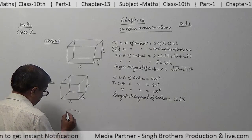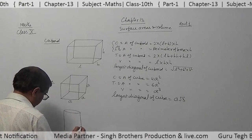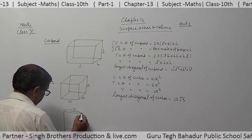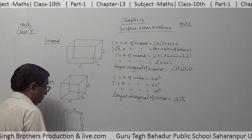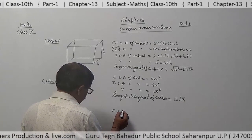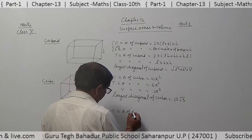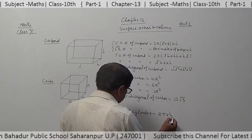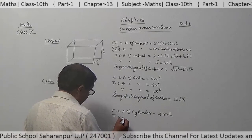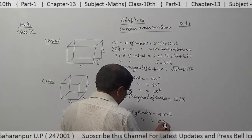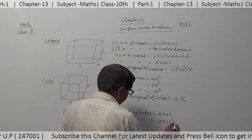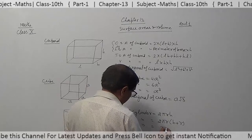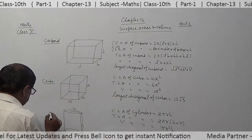Third, this is a cylinder with radius R and height H. Curved surface area of cylinder is 2πRH. Total surface area of cylinder is 2πR(H plus R). Volume of cylinder is πR squared H.